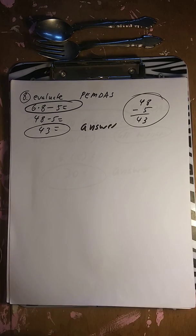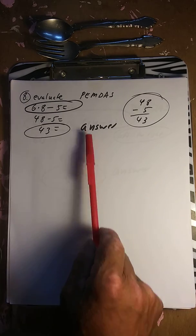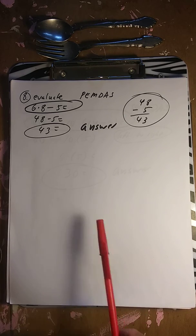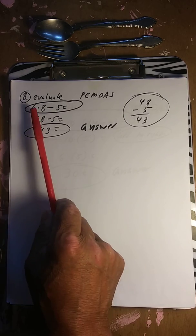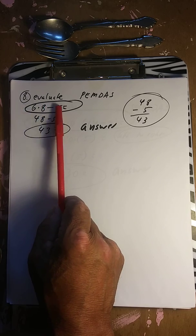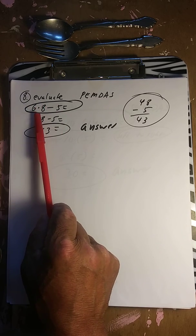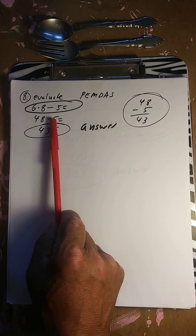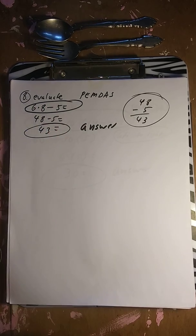Order of operations: PEMDAS — Please Excuse My Dear Aunt Sally — parentheses, exponents, multiply, divide, add, and subtract. Example: 6 times 8 minus 5. Multiply first: 6 times 8 is 48. Then 48 minus 5 is 43.